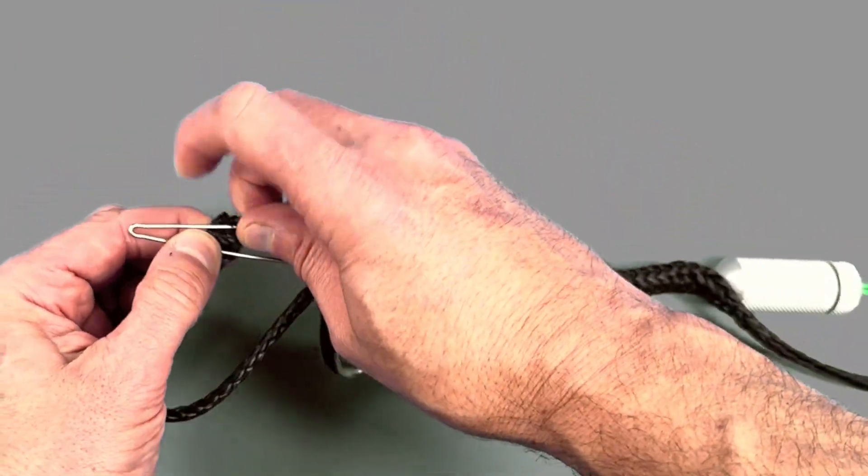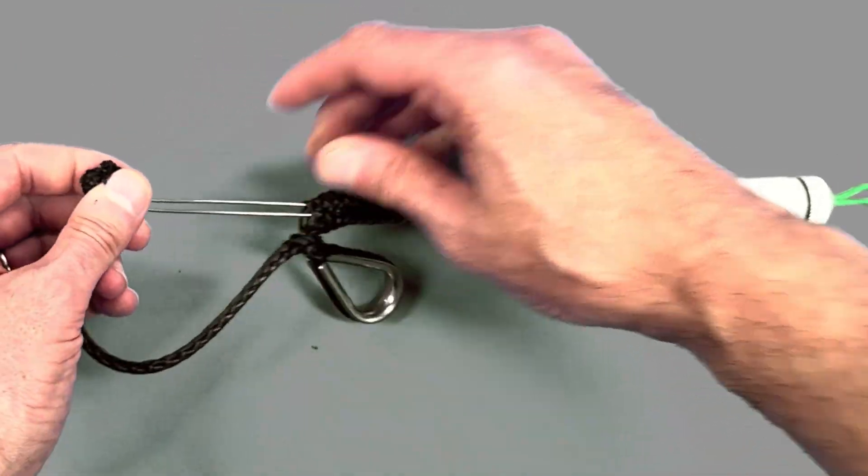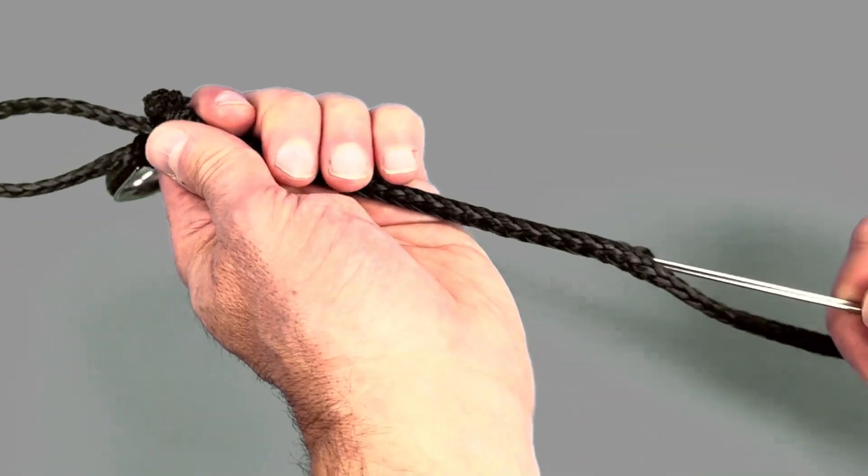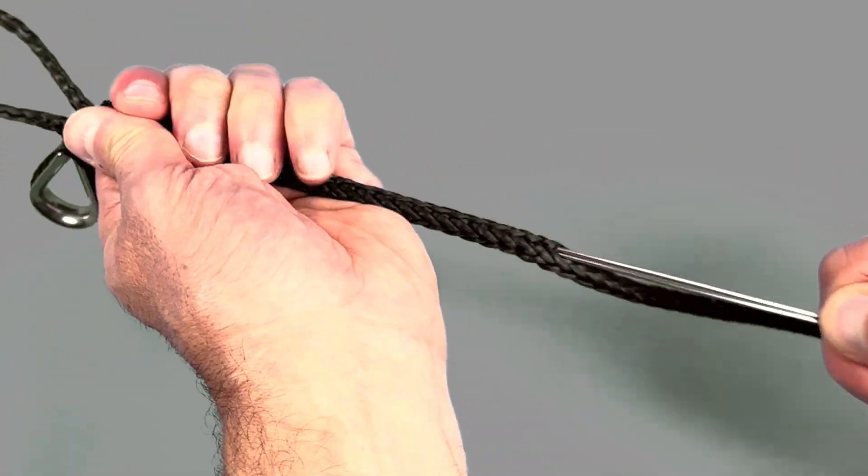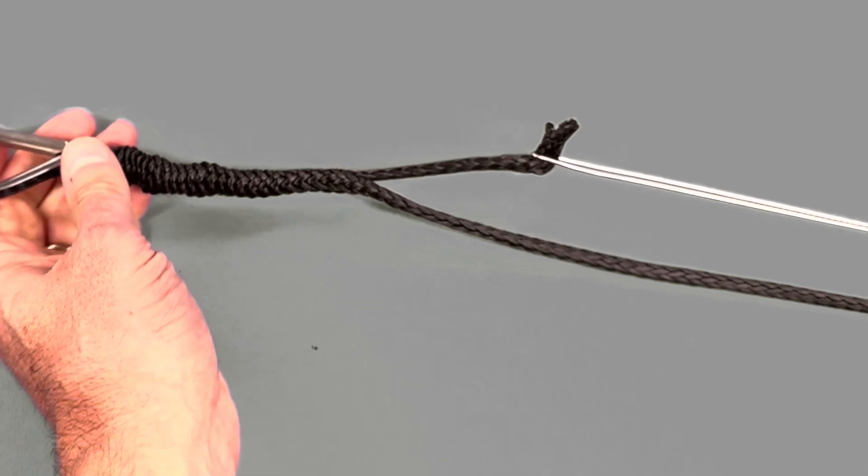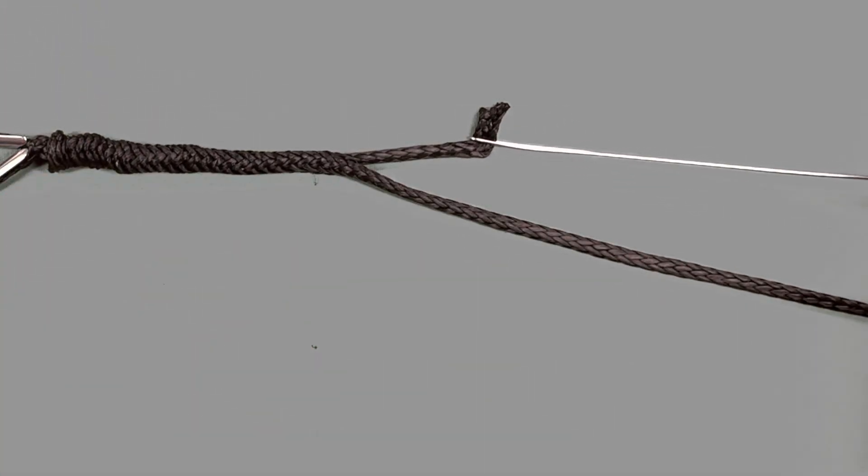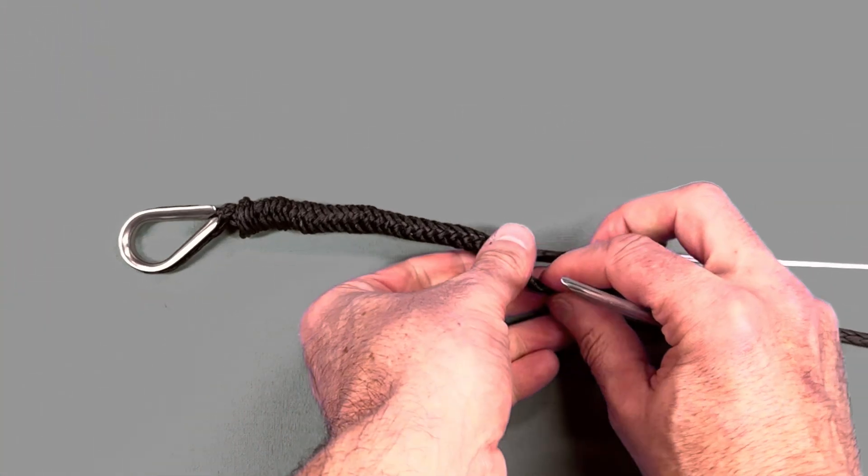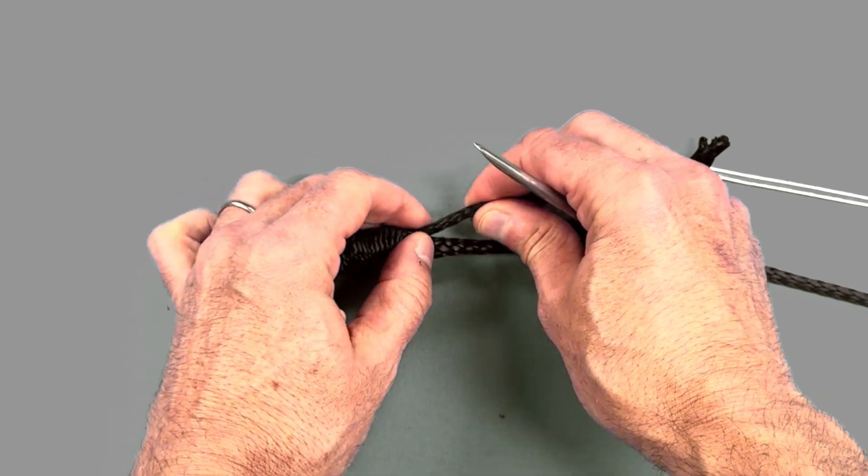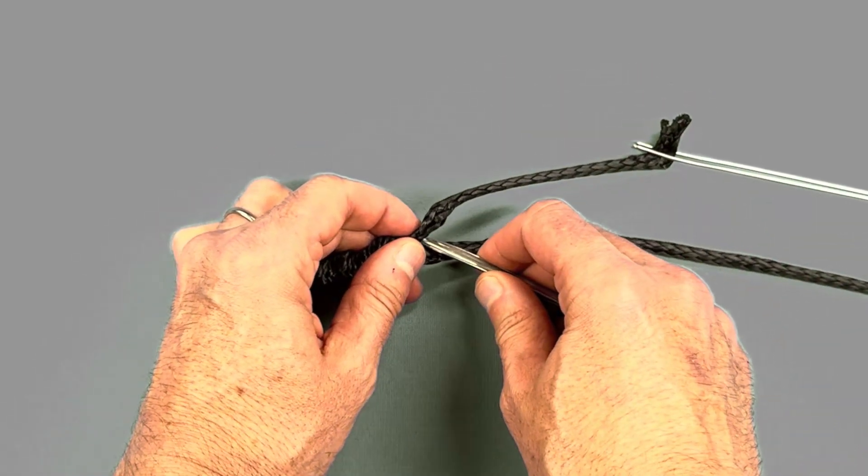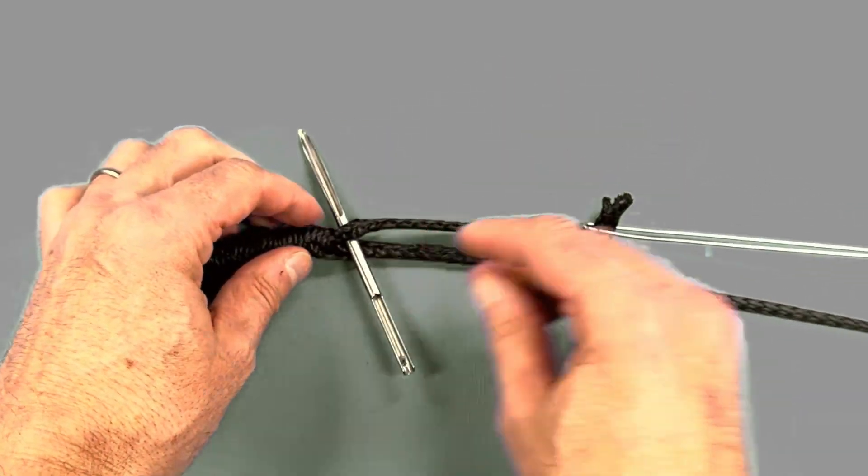Open up your D-splicer, put the working end in it, and then slowly work the end all the way through. At this point you want to scrunch up the Dyneema on the standing end, pulling out the working end, and then just insert the smallest fid you've got to hold it in place.